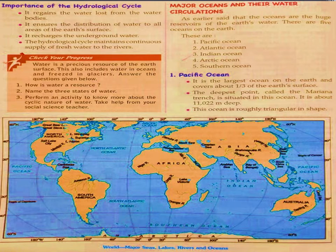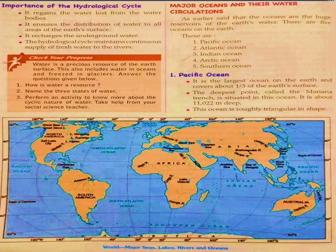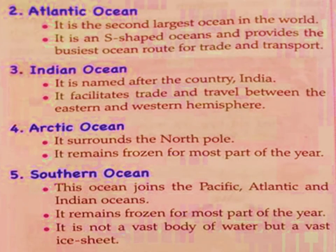The Pacific Ocean is the largest ocean on the earth — it covers one third of the earth's surface. The deepest point in the Pacific Ocean is the Mariana Trench, with a depth of 11,022 meters. The shape of the Pacific Ocean is roughly triangular. The Atlantic Ocean is the second largest ocean in the world and has an S shape. It provides the busiest ocean route for trade and transport.